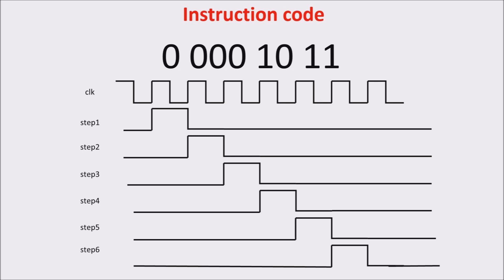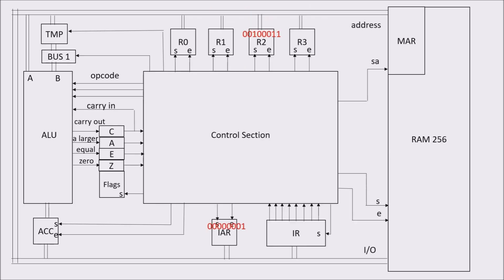In the first three steps, we put on the bus the instruction address, increment it by 1, and fetch the instruction in the instruction register. In the second three steps — steps 4, 5, and 6 — we execute the instruction. This is a simulation of the load instruction: you use the first three steps to fetch and increment the instruction address register, and steps 4, 5, and 6 to execute the load instruction.